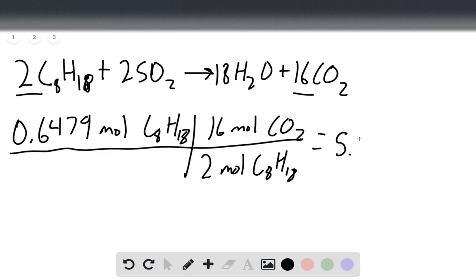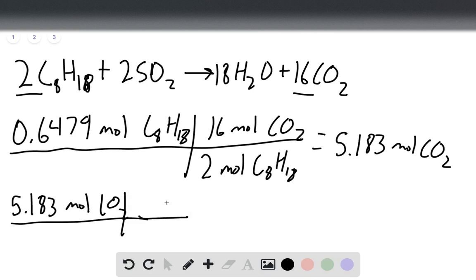So now in our final step we'll take our 5.183 moles of CO2 and multiply by the molar mass, 44.01 grams per mole, and that'll give us 228.113 grams of CO2.